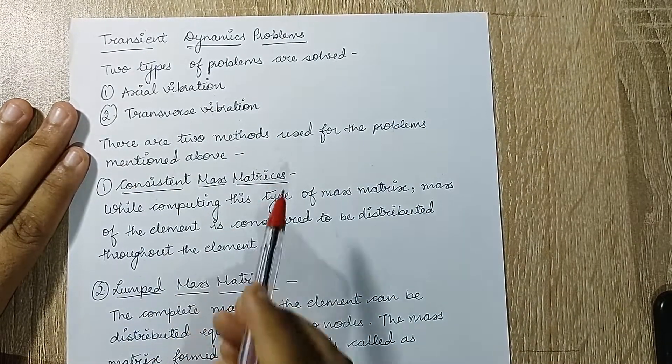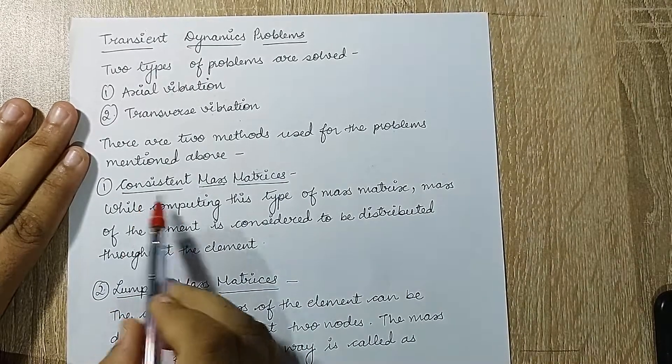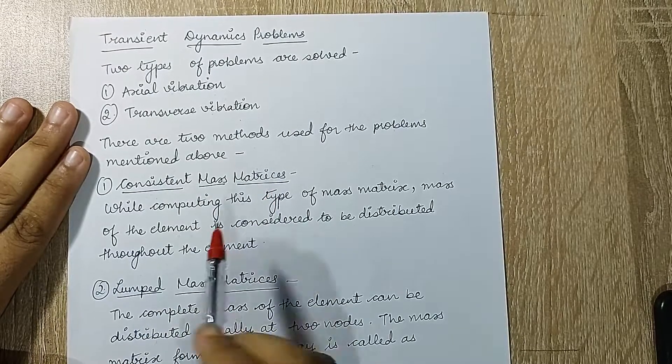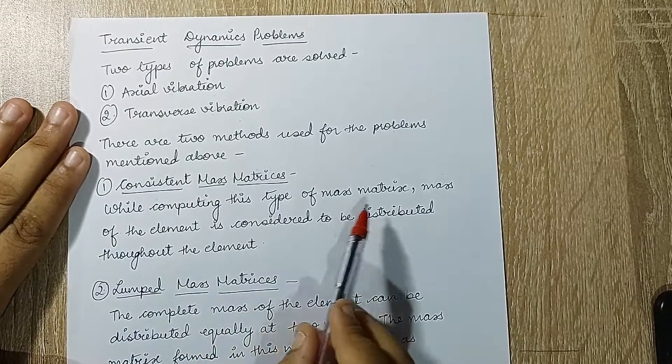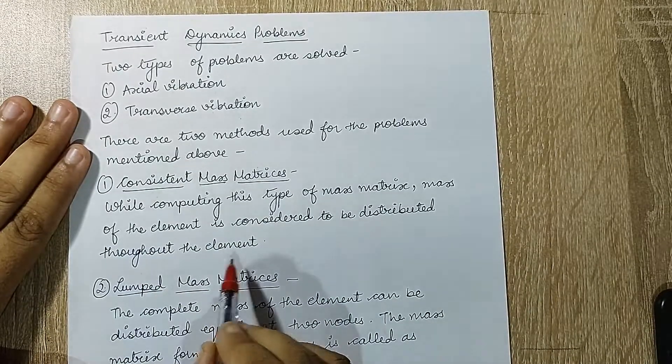There are two methods used for solving, which I mentioned below. The first type is called consistent mass matrix. While computing this type of mass matrix, the mass of the element is considered to be distributed throughout the element.